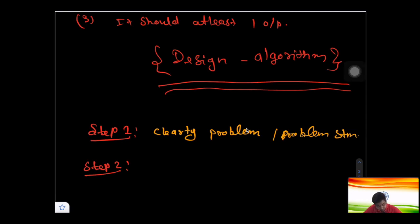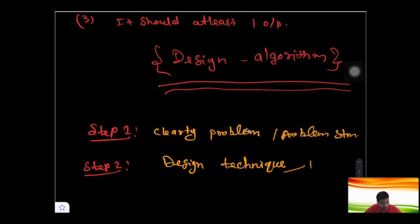Step 2 is to choose a design technique. The design techniques we will cover in this course include divide and conquer, dynamic programming, greedy technique, and many more. You need to decide which algorithm design technique will best help solve your particular problem.